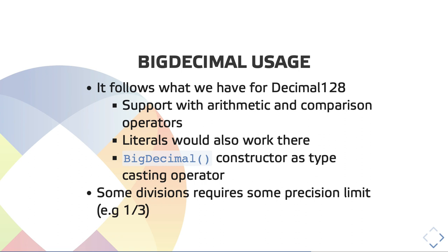The BigDecimal usage API follows pretty much what we have for Decimal128. The idea is to also provide literals using the M suffix. Arithmetic operations would be supported directly — I think that's the major gain when we compare with user-crafted libraries, because it's not possible for a user-crafted library to support operators directly, and we don't have operator overloading in JavaScript, so it's quite hard to support comparison operators. The idea is to support those directly, and strictly equals would also work for those primitive numbers.